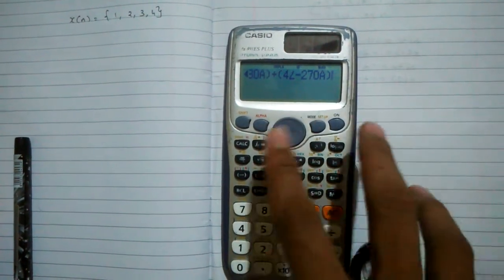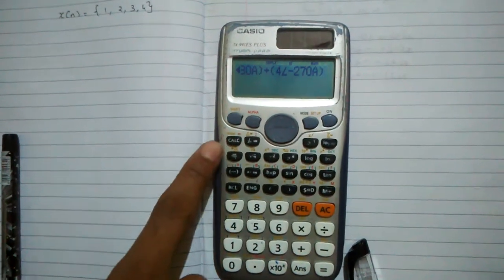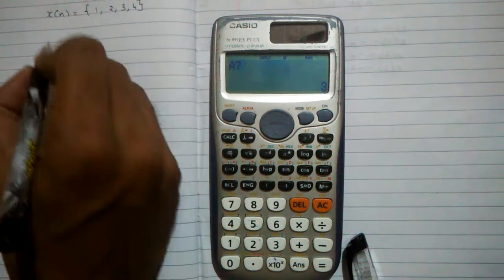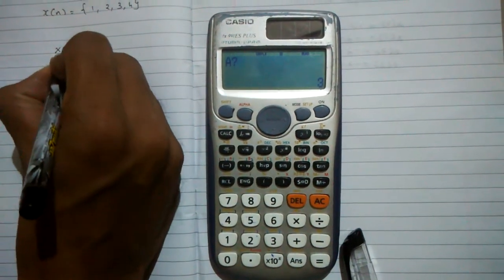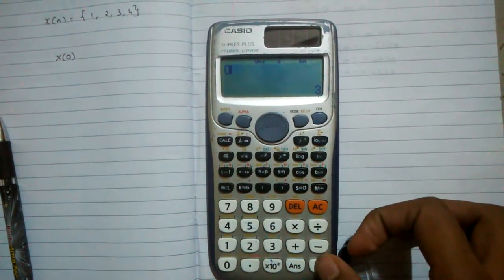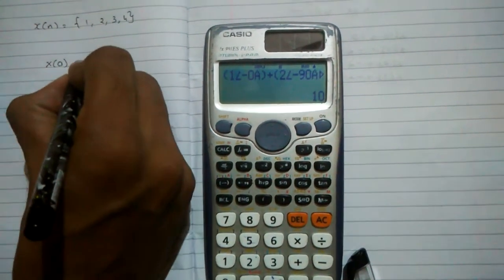Once you have done entering the values, then plus calculate on the left side. The first value that we have to find is x of 0. Plus 0 and then hit equals. You can see x of 0 is equal to 10.